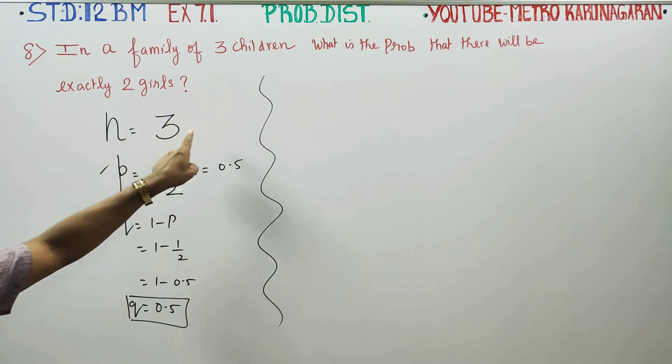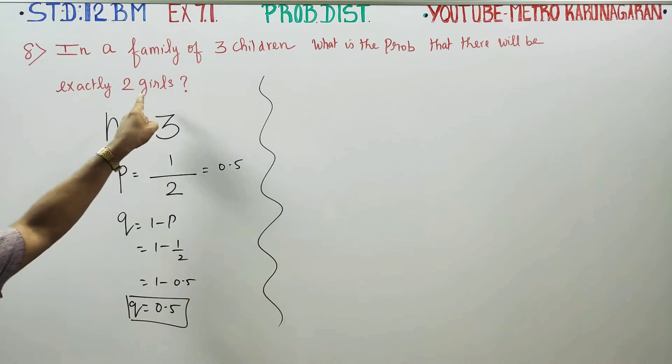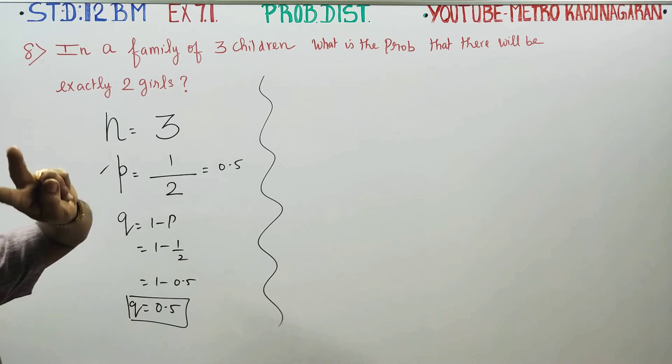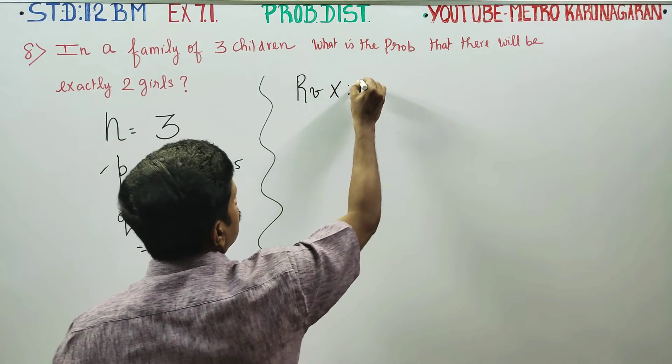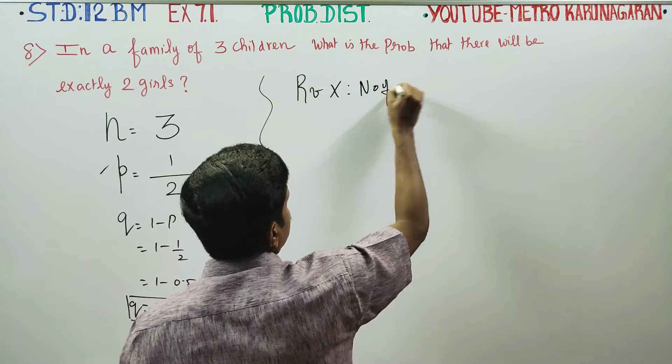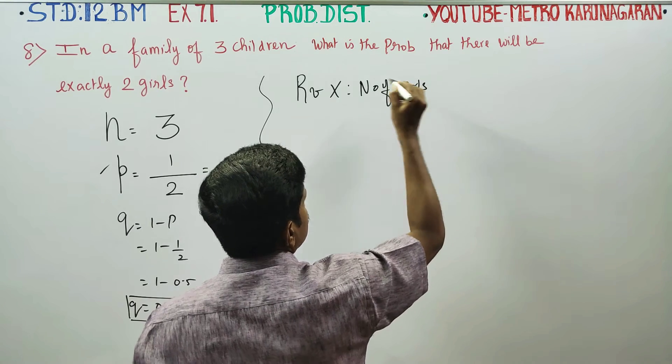If you choose three children, that means exactly two girls. This random variable x is number of girls.